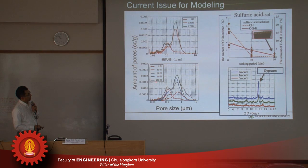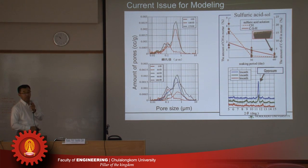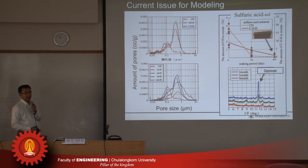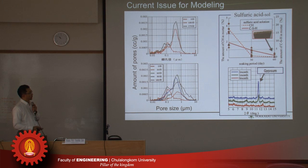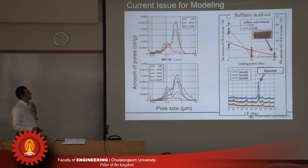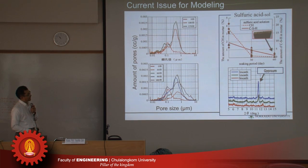At 60 and 90 days, the amount of CH and CSH was almost the same, but the pore-size distribution is not the same. The meaning of this is we have to consider not only the amount of CH and CSH, but also the pore-size distribution itself. This is the current issue. And also in the case of acid deterioration, we have another product like gypsum, so we are now trying to consider the influence of such materials.